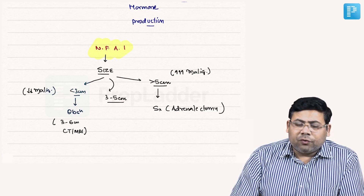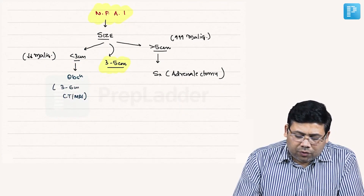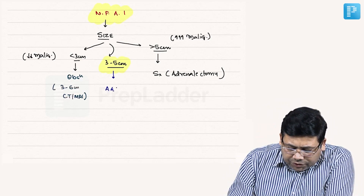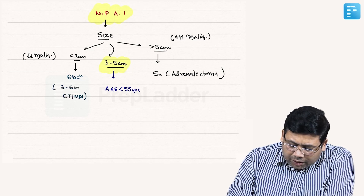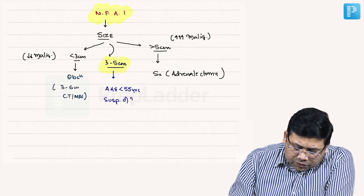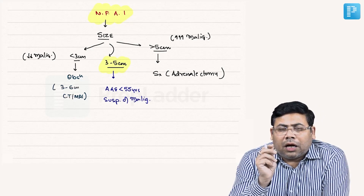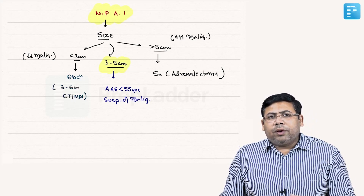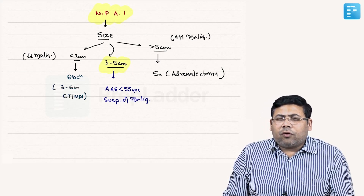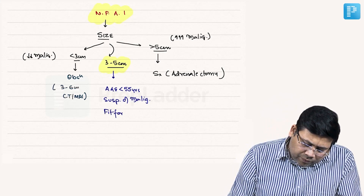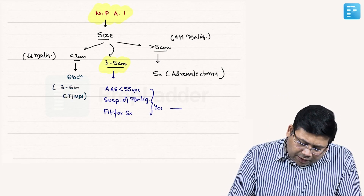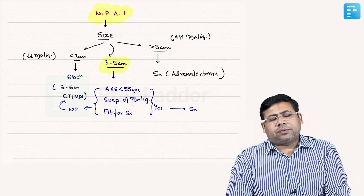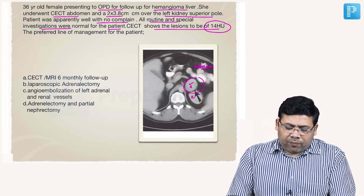For patients with three to five centimeters, this is a very tricky gray zone — you neither decide for surgery nor for observation. You ask three questions: Is the age of the patient less than 50 or 55 years? Is there a suspicion of malignancy — in this case the Hounsfield unit is more than 14, and for adrenal masses less than 10 is benign character while more than 10 is suggestive of malignancy? And is the patient fit for surgery? If the answer to all three questions is yes, you go for surgery; if no, you go for three to six monthly CT or MRI.